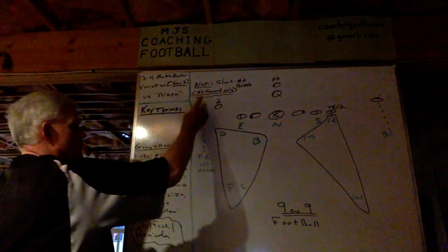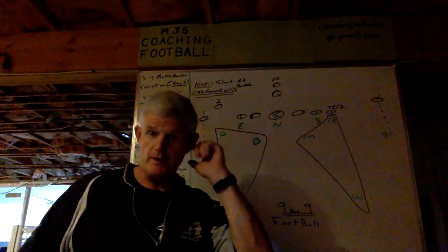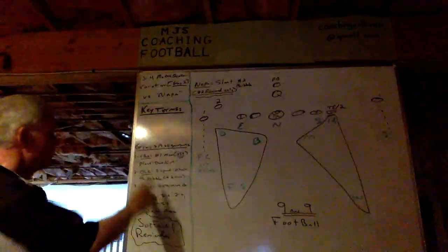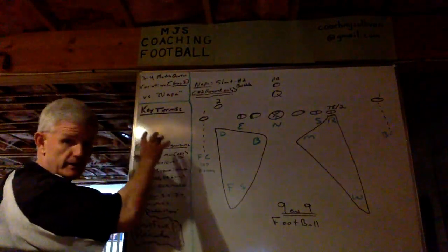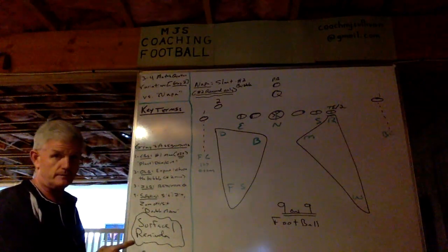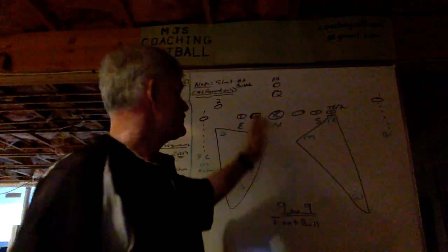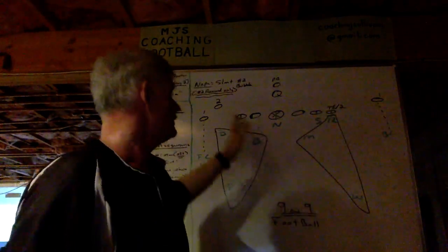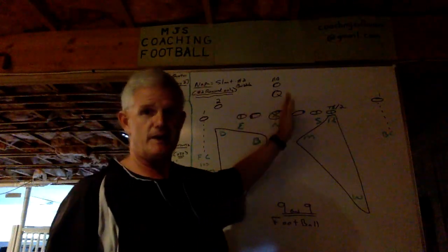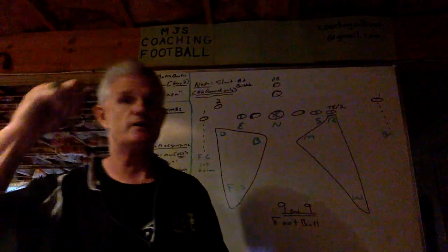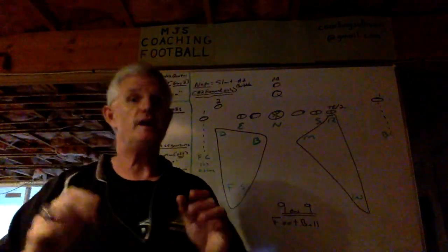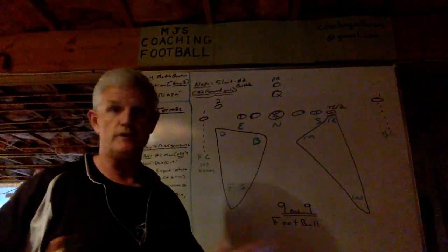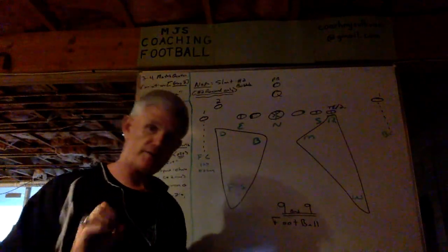On the number two removed side only, I'll show you how we defend and the premise of our match quarters variation gray three. So first, these are our gray three assignments. Before I get into those, I want to give you the surface reminder. The surface to us is the offensive line, and when there's a tight end, the tight end becomes a part of that surface — tackle, guard, center, guard, tackle, and tight end on this side. That's what we call the surface. It tells us run, the direction of the run, and pass. So all of our defenders are reading the surface first so we know whether it's run, the direction, and whether it's pass. The offensive line gives you all that.